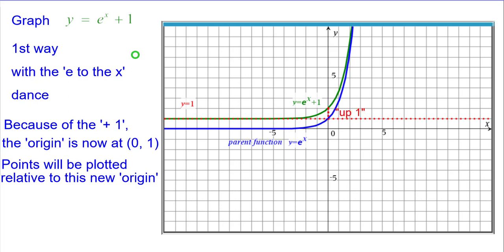And you can see that these two corresponding points from blue to green is up 1. Here from blue to green is up 1 and from the parent up to e to the x plus 1 also up 1 as it is along every point on the graph.